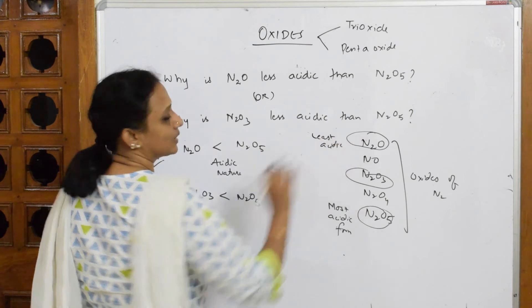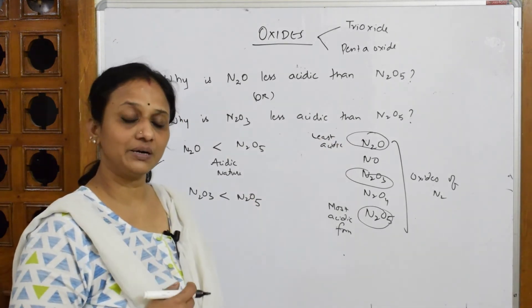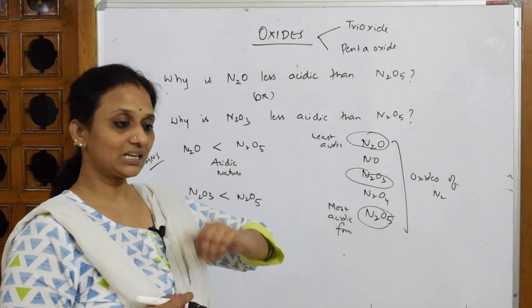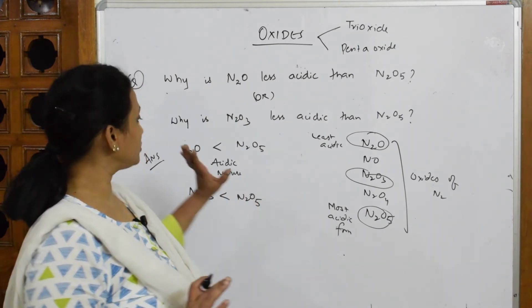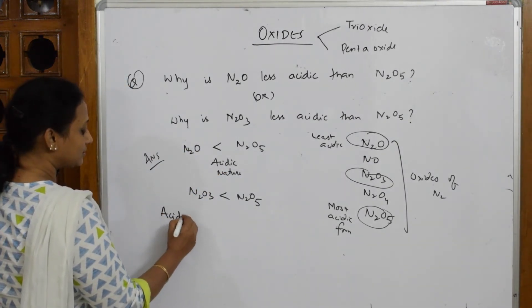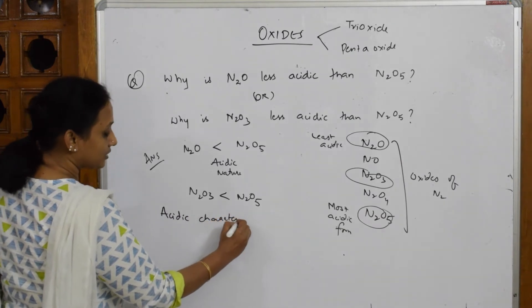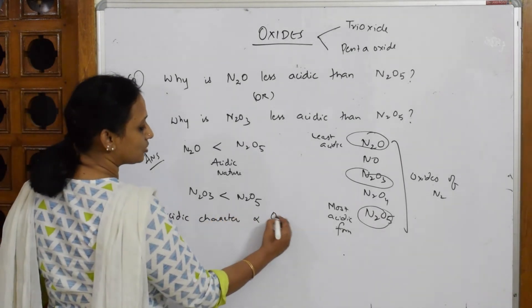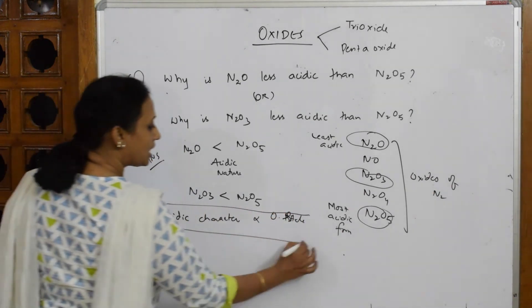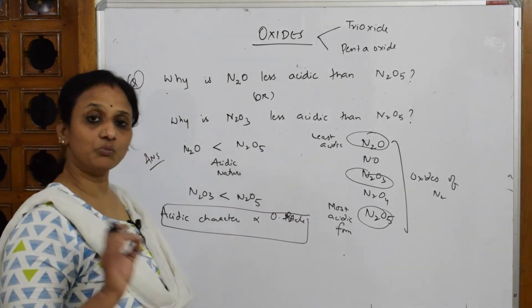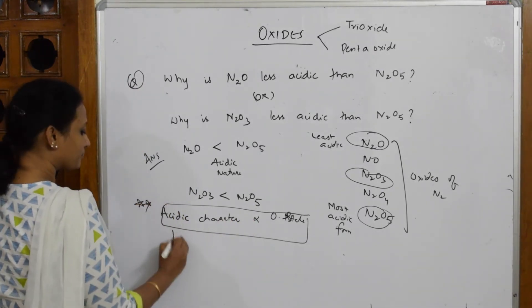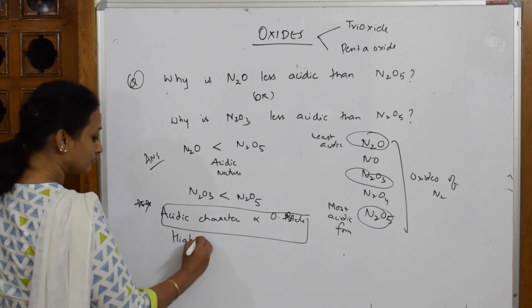Number one thing: whenever acidic character is given, if they're giving you generally like this, simple acidic character is directly related to your oxidation number or oxidation state. That means higher the oxidation state, more would be its acidic nature. Remember that concept, very important: higher oxidation state, higher is its acidity.